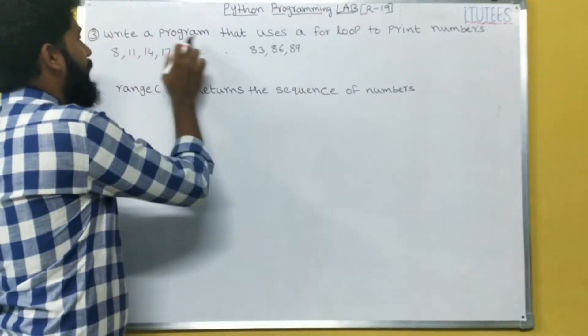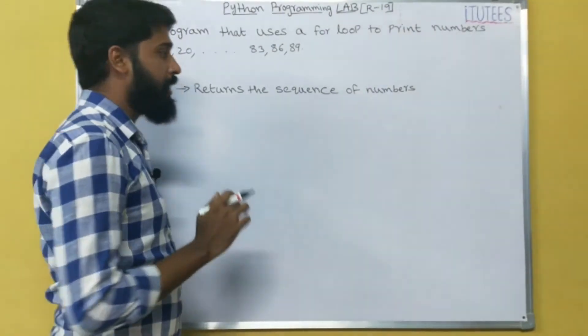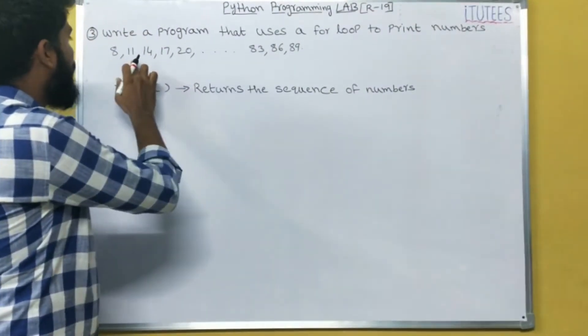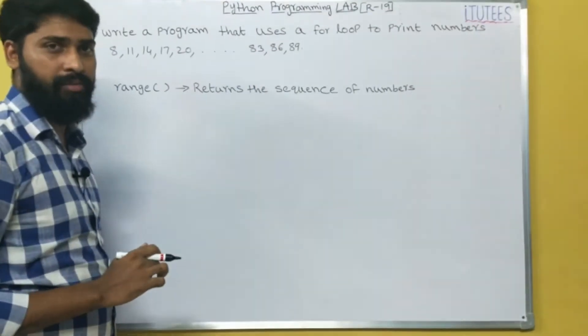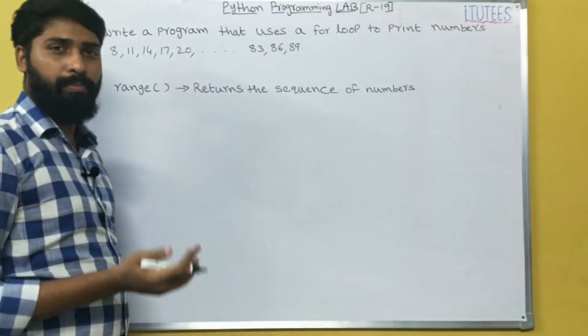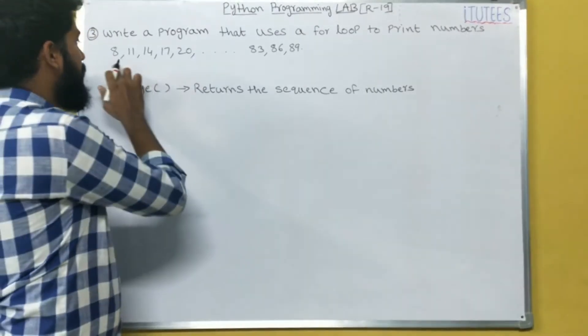The program is: write a program that uses a for loop to print numbers 8, 11, 14, 17, 20 up to 83, 86 and 89. That means you are going to write a program with the help of for loop. The output is this series.